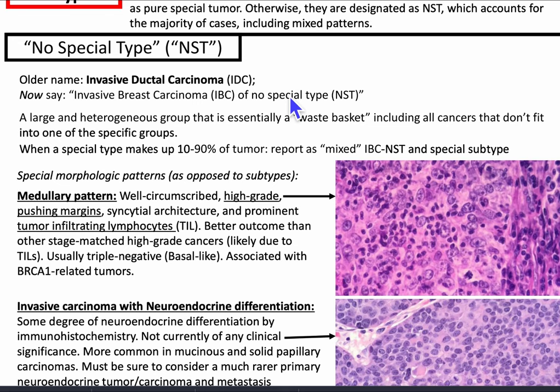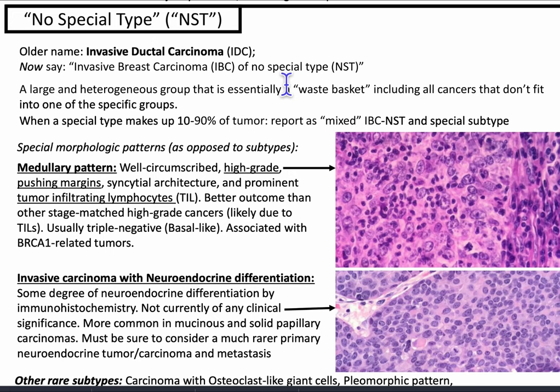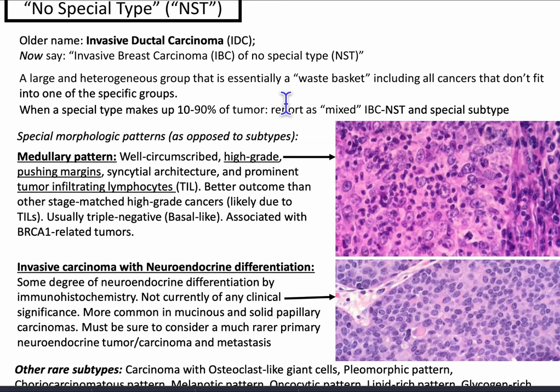The older name is invasive ductal carcinoma; now we say invasive breast carcinoma of no special type. It's a large and heterogeneous group that is essentially a wastebasket, including all cancers that don't fit into one of the specific groups. When a special type makes up 10 to 90% of the tumor, report as mixed invasive breast cancer, no special type and special subtype.